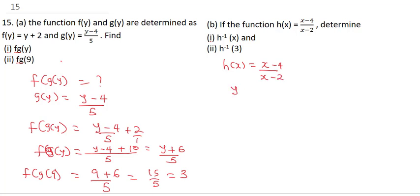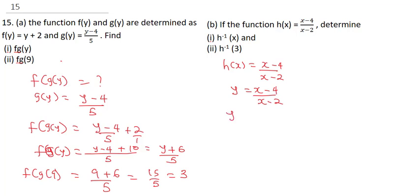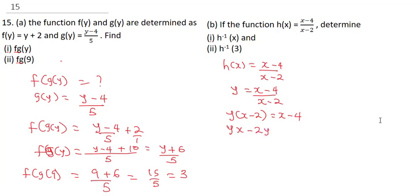I'm going to let y equal x minus 4 over x minus 2 — that's my first step. From here, I'm going to make x the subject of the formula. I'm going to cross multiply, giving y times (x minus 2) equals x minus 4. Expanding this bracket, you get yx minus 2y equals x minus 4.